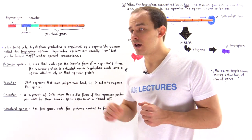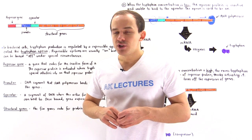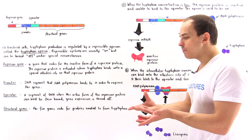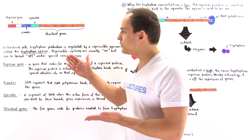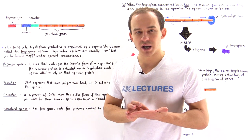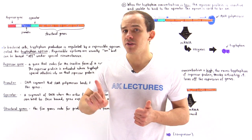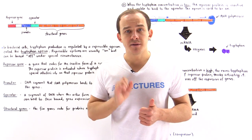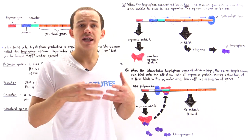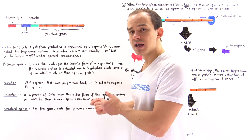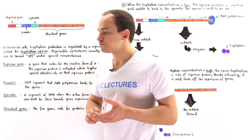A specific example of a repressible operon used by bacterial cells is the tryptophan operon. A repressible operon is the most common type of operon used by bacterial cells in anabolic processes, and a repressible operon is usually on, but sometimes, under certain circumstances, it can be turned off. The tryptophan operon is an operon used by bacterial cells to regulate the synthesis of the tryptophan amino acid.